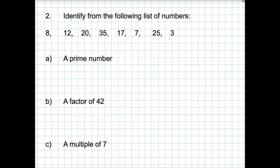Question 2. Same type of question. Identify from the following list of numbers: a prime number, a factor of 42, and a multiple of 7. Prime numbers, remember, can only be divided by itself and 1. 17 is a prime number. 7 is a prime number. And 3 is a prime number.